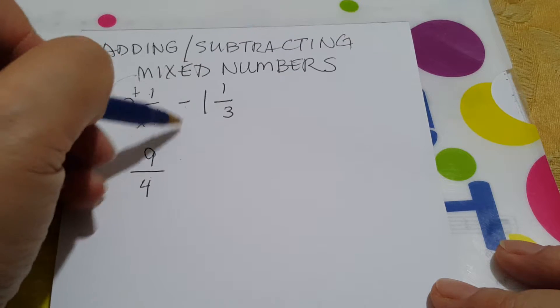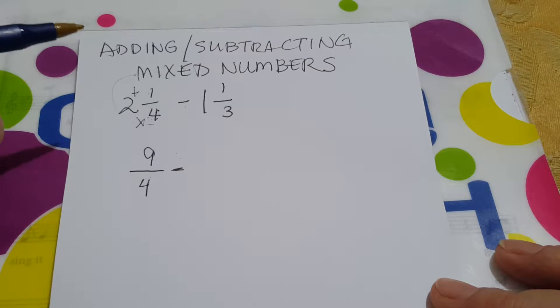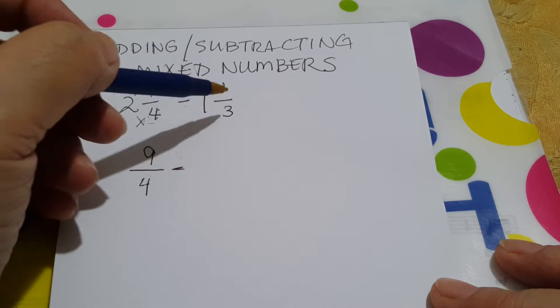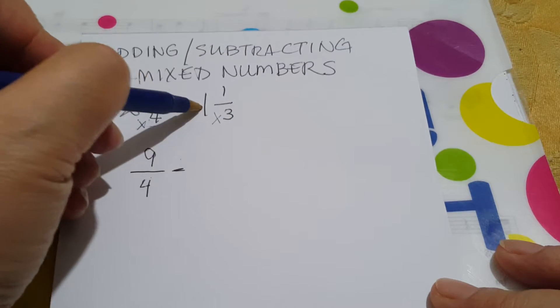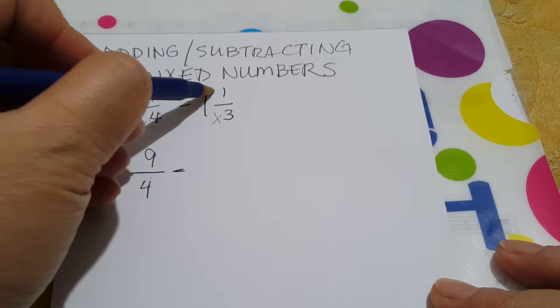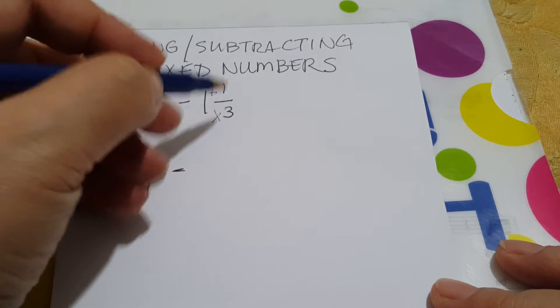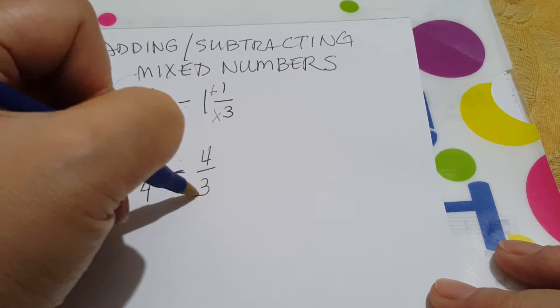Now copy the operation properly. Now let's do this. Denominator times whole number is 3 plus numerator 1, 4. So this will be 4 over 3.